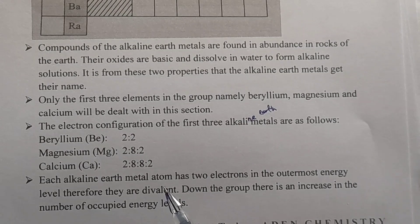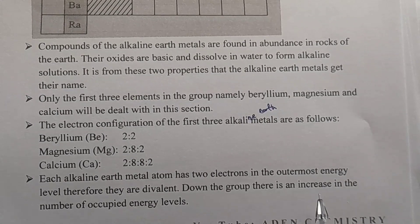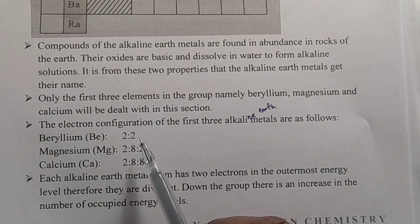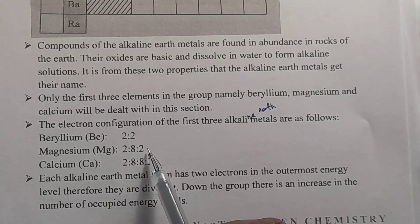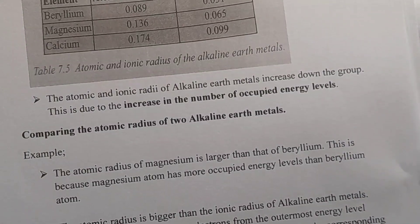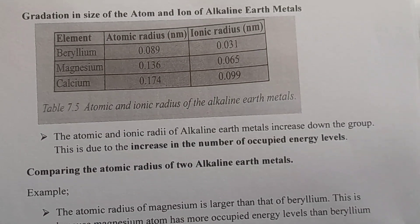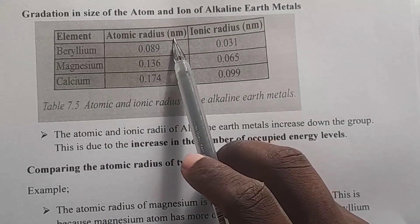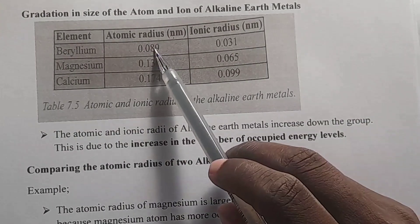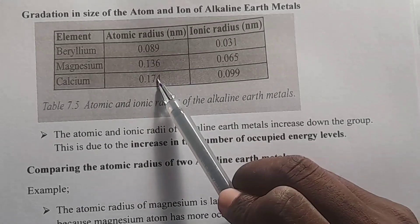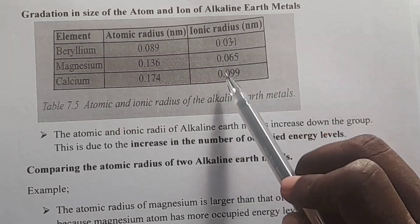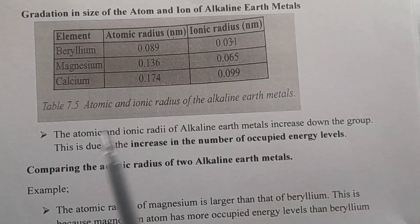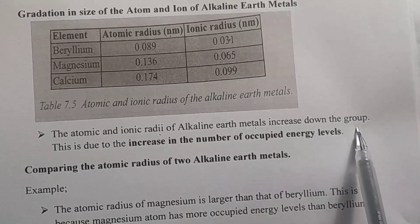Down the group, there is an increase in the number of occupied energy levels. Beryllium has two occupied energy levels, magnesium has three, and calcium has four. Now we look at the gradation in size of atoms and ions of alkaline earth metals. We have the elements beryllium, magnesium, and calcium with their atomic radius measured in nanometres and their ionic radius. The trend shows that both the atomic radius and the ionic radius of alkaline earth metals increase down the group.